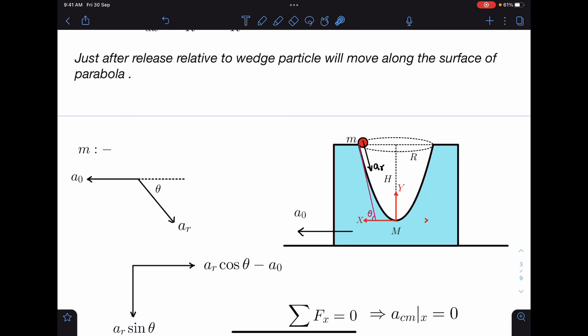Now this point is very important because here I will reduce one unknown. This acceleration with respect to ground is a₀ and here with respect to this I am taking as aᵣ, the relative acceleration.